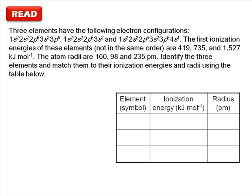The question first asks you to identify the three elements described by the given electron configurations, and then asks you to assign a first ionization energy and atom radius to each element.